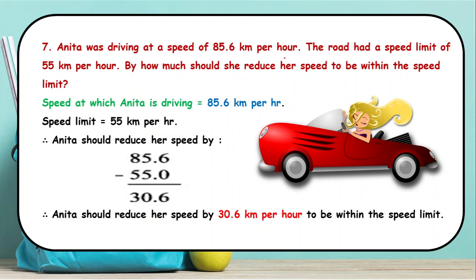The next word problem: Anita was driving at a speed of 85.6 km per hour. The road had a speed limit of 55 km per hour. How much should she reduce her speed to be within the speed limit? Since she needs to reduce her speed, we do subtraction: 85.6 minus 55 gives 30.6. So Anita has to reduce her speed by 30.6 km per hour to be within the speed limit.